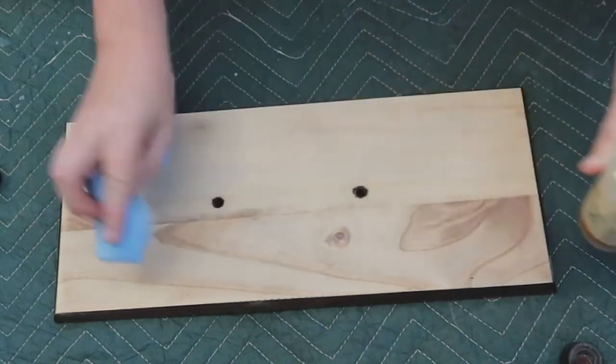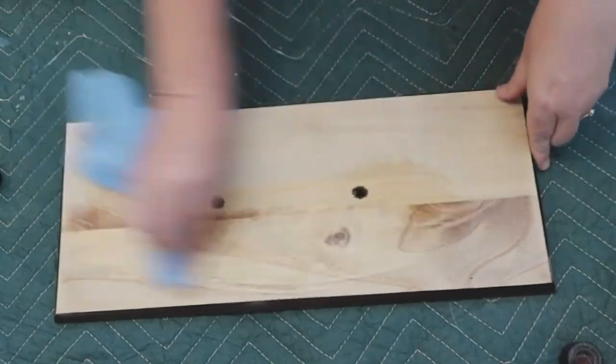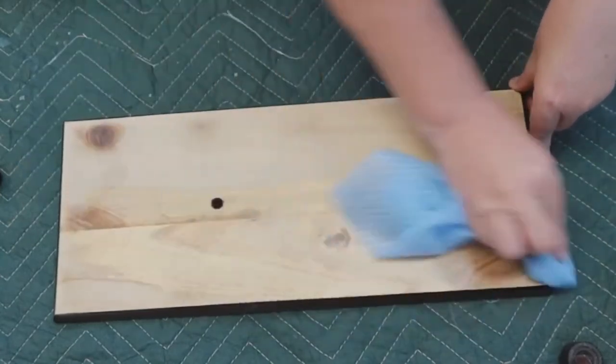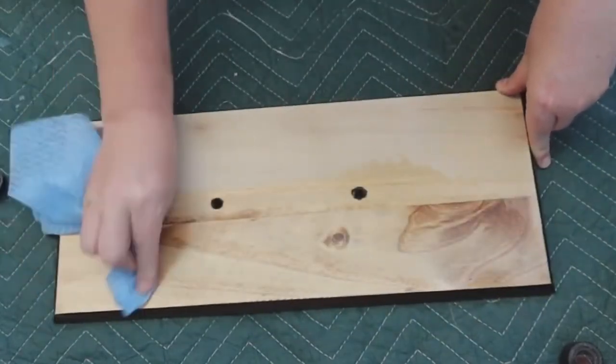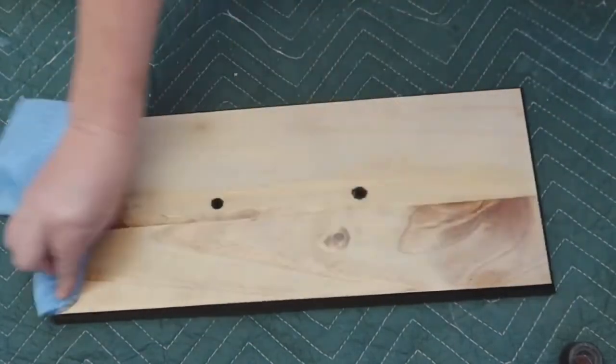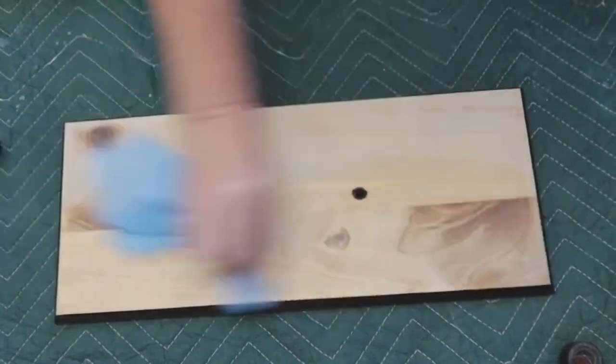When you're using a wax on furniture, the reason you come back and buff it off is because it will harden, so it's going to protect the furniture. You put it on and then come back later and buff off any excess.